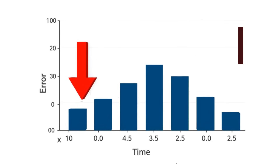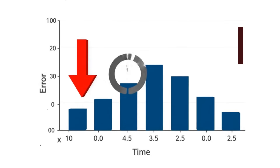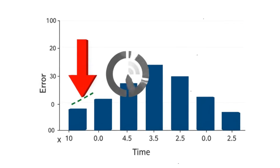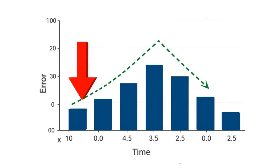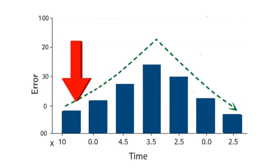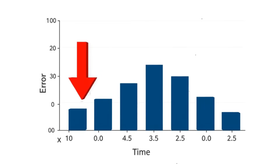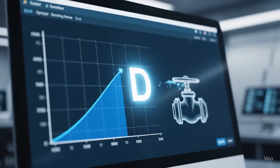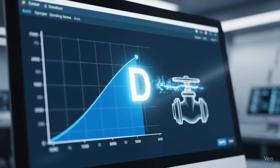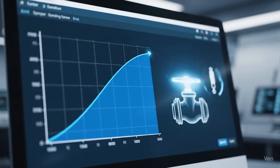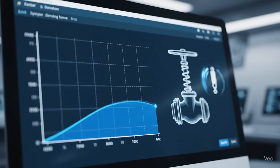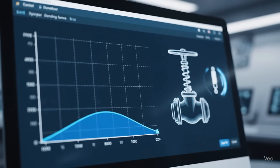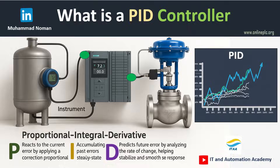I — integral — fixes what we missed earlier. It looks at past errors, adding them up over time, eliminating steady errors that never quite reach the target. D — derivative — slows things down when changing too fast. It predicts future error trends and prevents overshoot, adding stability and smoothness.